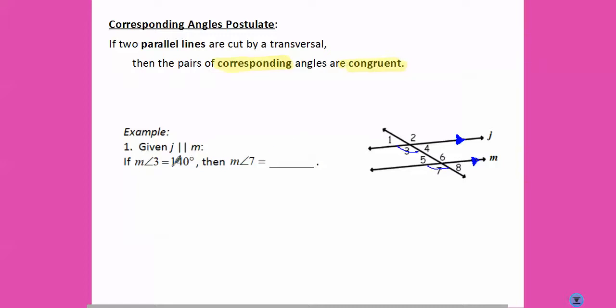So if the measure of angle three is 120 degrees, the measure of angle seven is 140 degrees.